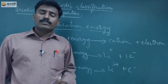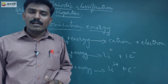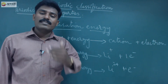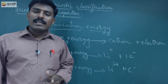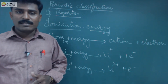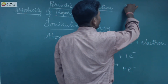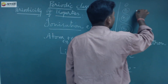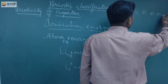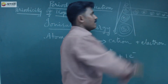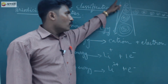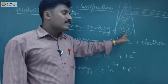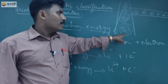Going down the group: ionization energy decreases in a group, while ionization energy increases in a period. Going down the group, atomic size increases; but in a period, atomic size decreases. Going down the group, the number of shells increases, and ionization energy decreases — the distance between the last electron and the nucleus increases.